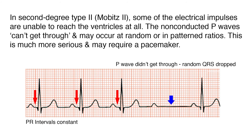In second degree type 2, or Mobitz 2, some of the electrical impulses are unable to reach the ventricles at all. The non-conducted P waves can't get through and may occur at random or in patterned ratios. This is much more serious and may require a pacemaker.